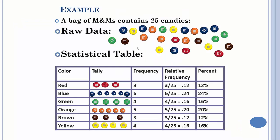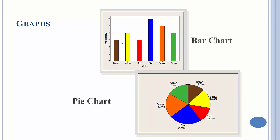Bar graphs are basically a visual representation of just the frequency part of the table. So if you look at the frequencies 3, 6, 4, 5, 3, 4, you can see these heights just represent the frequencies.